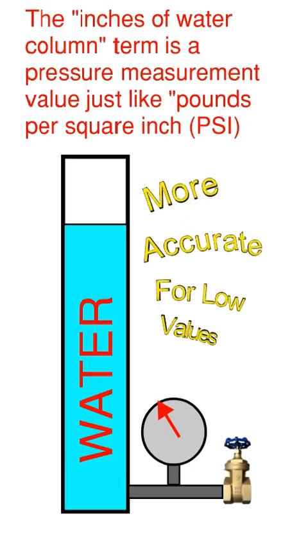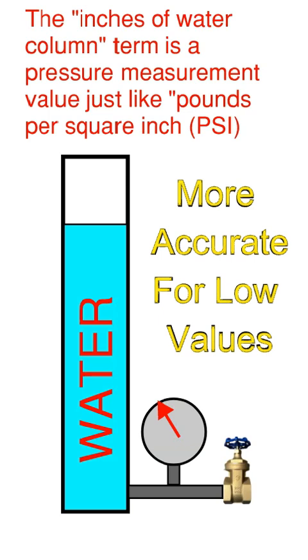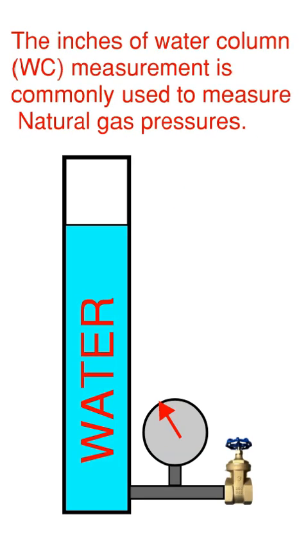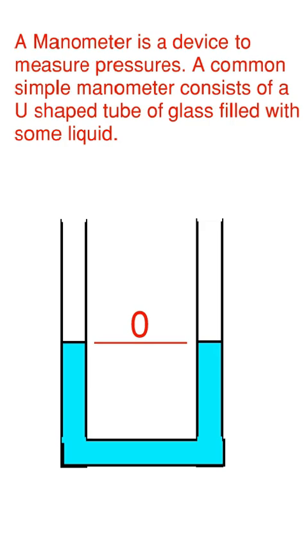The inches of water column term is a pressure measurement value just like pounds per square inch. The inches of water column measurement is commonly used to measure natural gas pressures, the low pressures of gas.